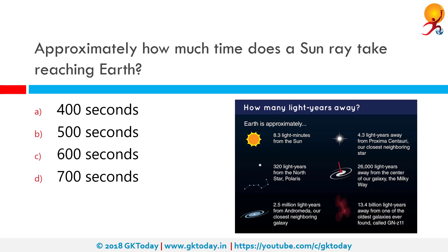Approximately how much time does a sun ray take to reach Earth? Sunlight travels at the speed of light. Photons emitted from the surface of the sun need to travel across the vacuum of space to reach our eyes. The short answer is that it takes sunlight an average of 8 minutes and 20 seconds to travel from the sun to the Earth — that is 8 × 60 + 20 seconds, or 500 seconds.